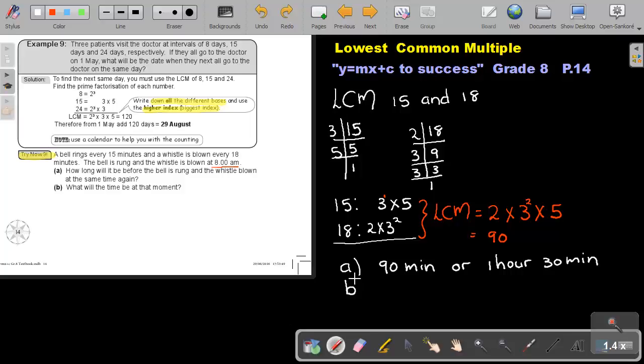And, let's look at number B. What will be the time at that moment? Remember, it's starting at 8 AM. So, if I take 8 and I add the 1 hour and 30 minutes, I will get 9, 30, and it will still be AM. So, that will be the time when the bell ring and the whistle is blown at the same time.